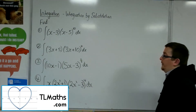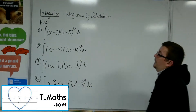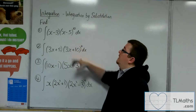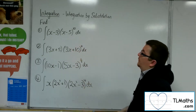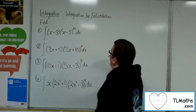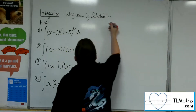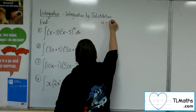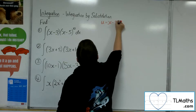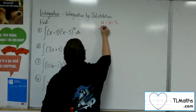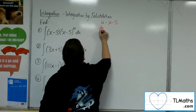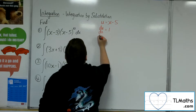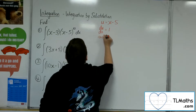We're going to work through these four examples. First up, we've got the integral of x minus 3 times x minus 5 to the power of 10 dx. The u in this case will be x minus 5, so du by dx will be 1, and du will just be dx.